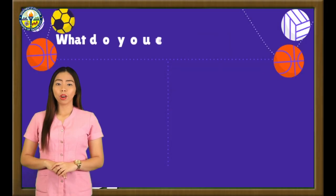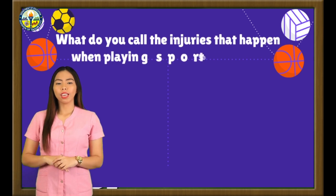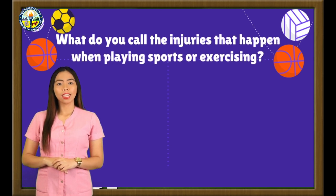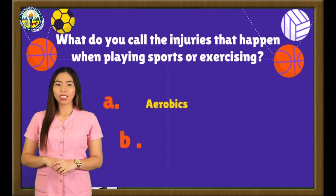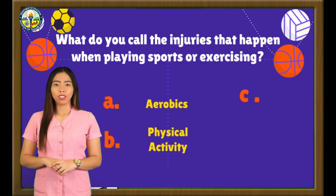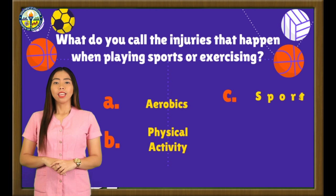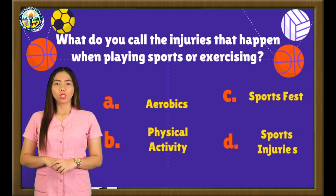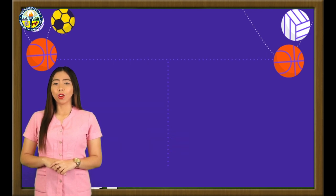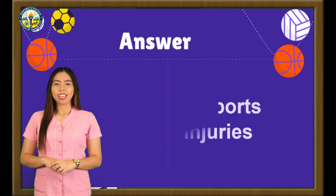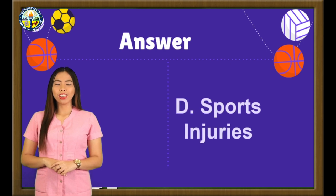Number 1. What do you call the injuries that happen when playing sports or exercising? A. Aerobics. B. Physical Activity. C. Sports Fest. D. Sports Injuries. The correct answer is letter D: Sports Injuries.